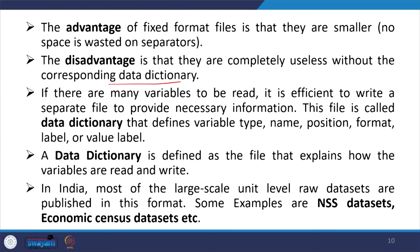The data dictionary defines variable type, name, position, format, label, value label, etc. It includes whether variables are string or numeric, the name to specify, their byte position and duration, and optionally format and value labels. Data dictionary is defined as the file that explains how the variables are read and written. In India, most large-scale unit-level raw datasets are published in this format. Some examples are NSS datasets, economic census datasets, etc.